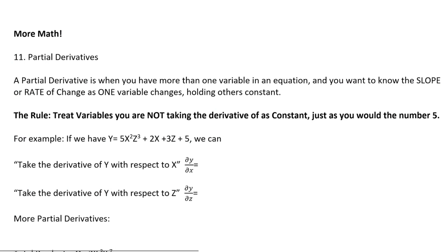In this video we're finally getting to a little bit of math that you might not have seen before in any of your other classes. We're going to talk about a partial derivative. Now we know that a derivative is a slope — it tells us the change in one thing when something else changes. It's a rise over run.